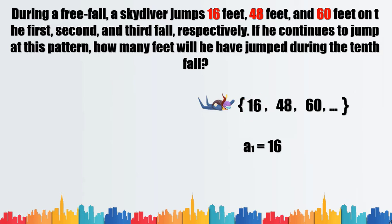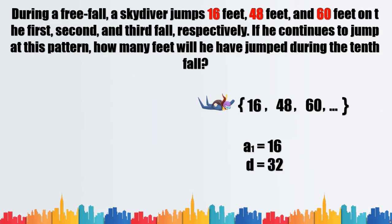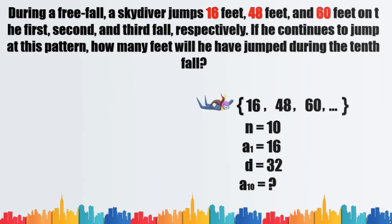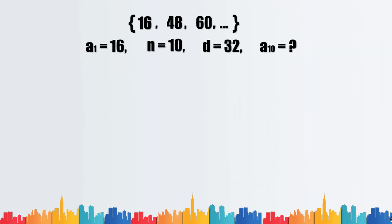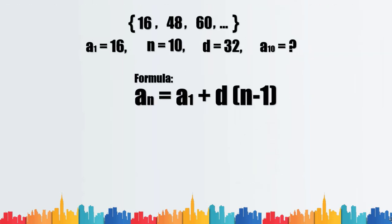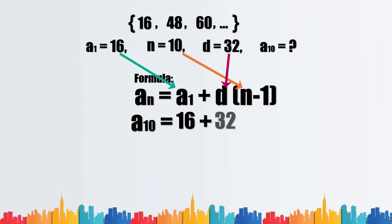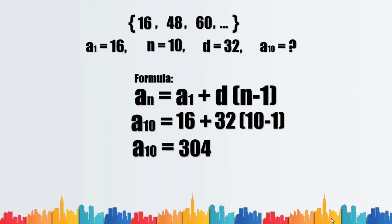We find the difference of two consecutive terms to get the common difference; d is equal to 32. The value of n is equal to 10, since we are asked for the distance on the skydiver's 10th fall. We now use the formula for arithmetic sequence and substitute the known terms. Therefore, on the 10th fall the skydiver reached a total distance of 304 feet.